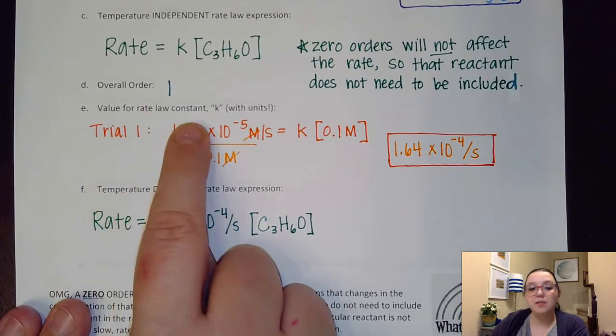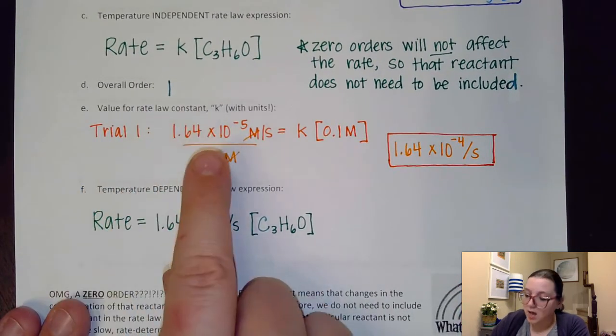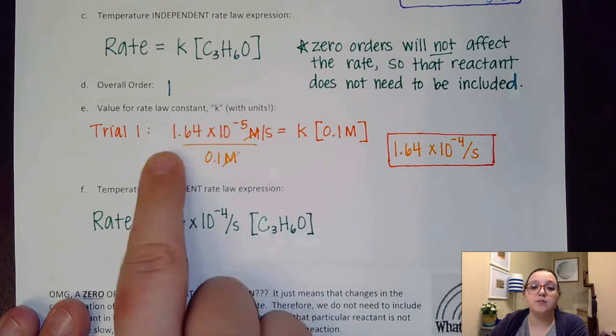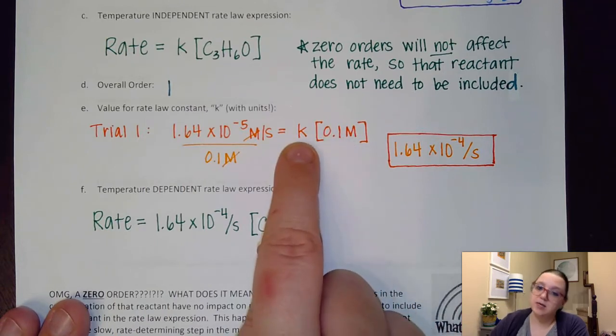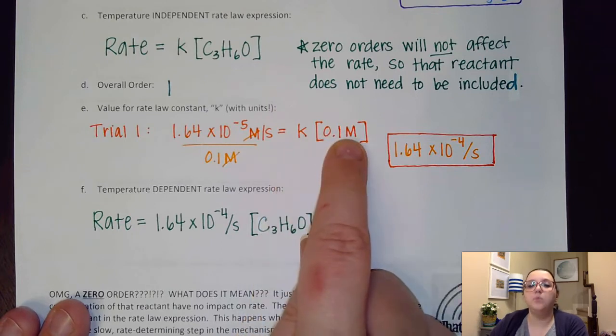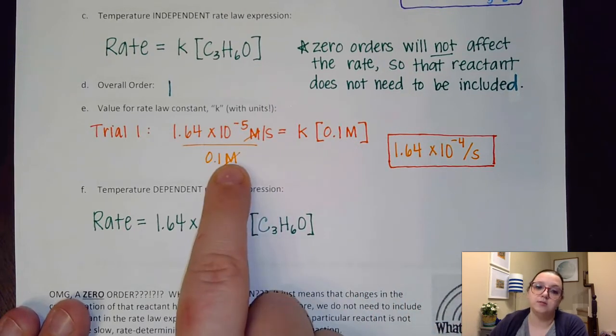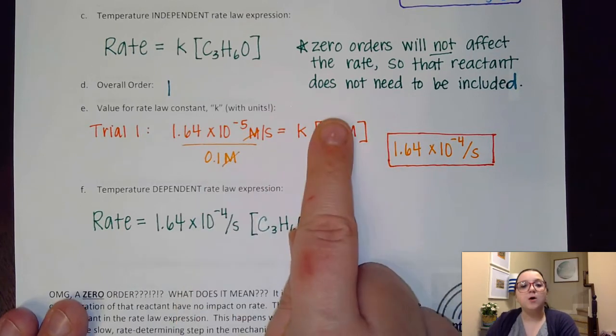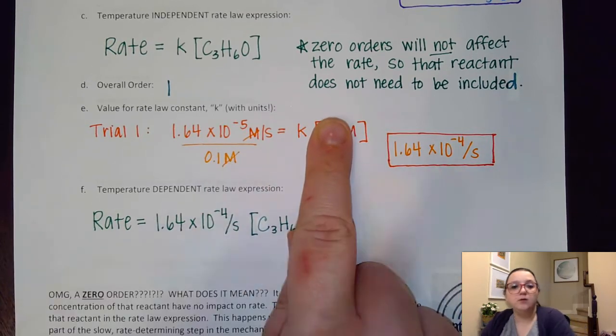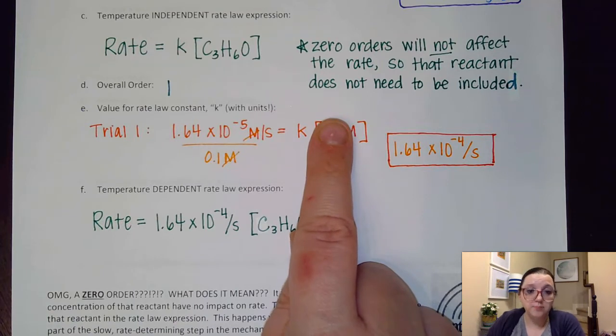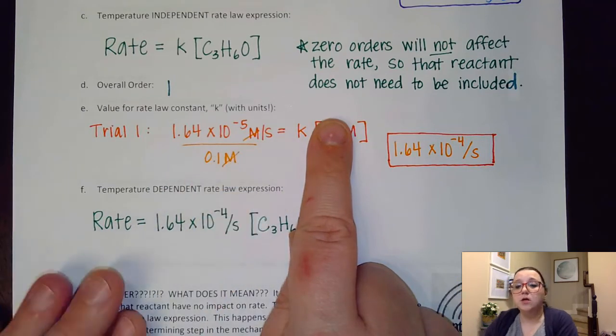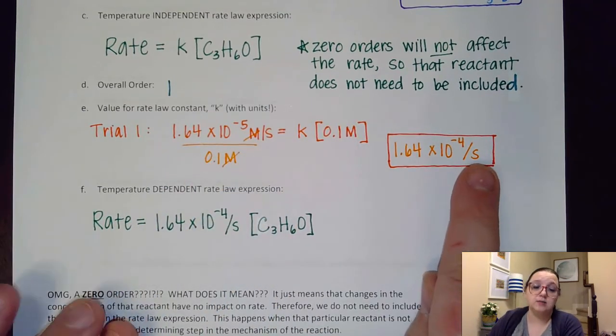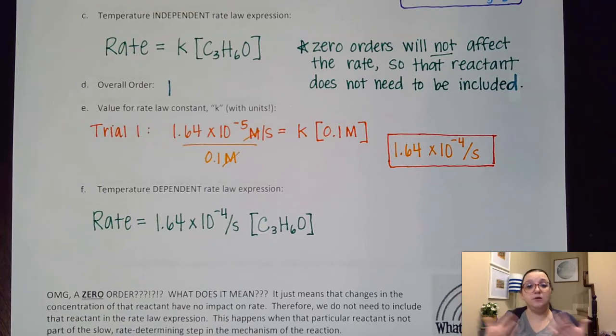So now the value for the rate law constant K with units. In the dark orange here, I have plugged in everything to my rate law expression. So I didn't rearrange this before I solved. So what I did then is I said, hey, I want to get K by itself. So that means I need to bring this 0.01 over to the other side. So when I divided that over here, what that ended up doing is getting me a value of 1.64 times 10 to the negative fourth. The two molarities ended up canceling out. And so that gave me a unit of just divided by seconds. You could have also reported seconds to the negative first.